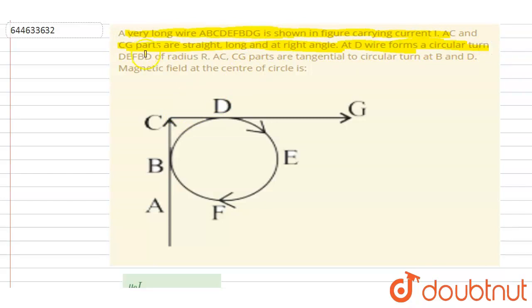The wire forms a circle of radius R, then it is tangential to the circular turn at B and D. Then you have to find out the magnetic field at the center of the circle. So if we talk about the magnetic field at the center of the circle, the magnetic field will be because of three elements.